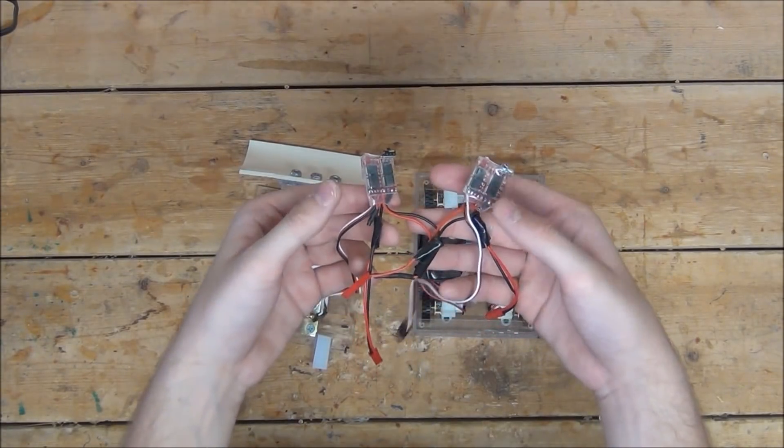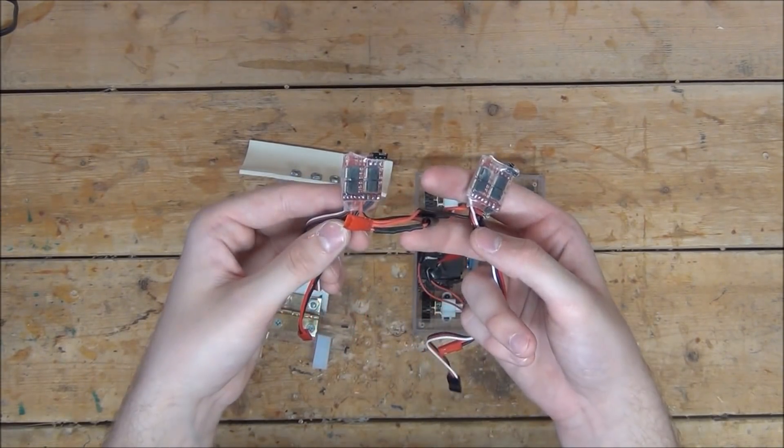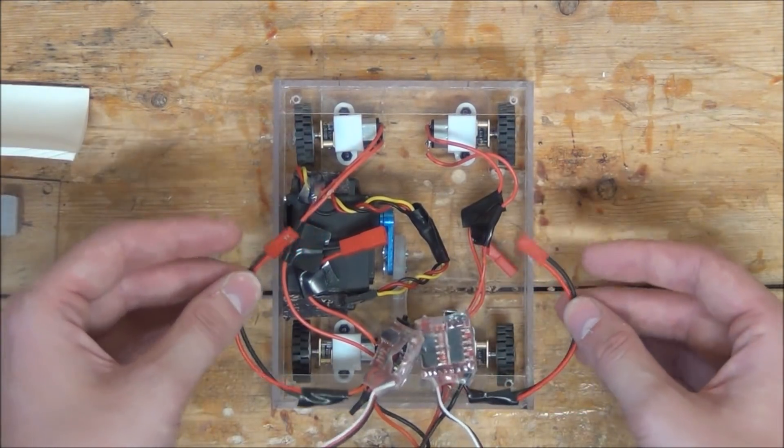I also wired the motors from each side together and hooked up this little connector to each set. So now I'm going to take my two speed controllers that share a battery cable and plug in each one into one of the motor connectors we just spoke of.